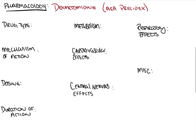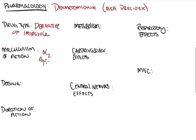Dexmedetomidine is a derivative of — or is an imidazole derivative — and its mechanism of action is primarily alpha-2 agonism.